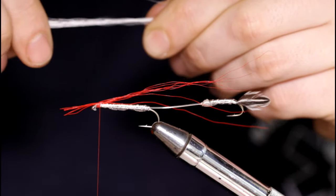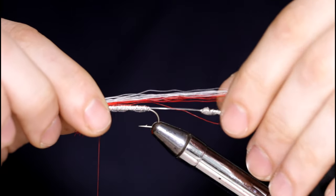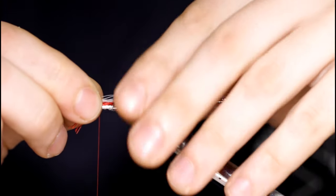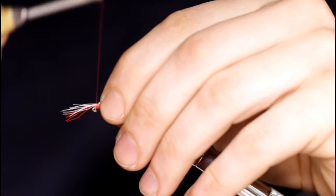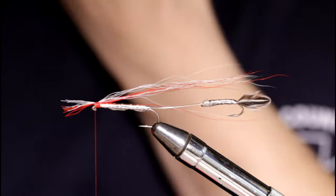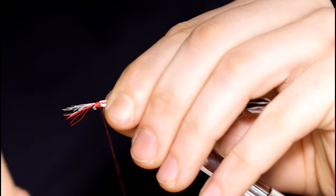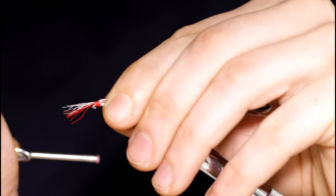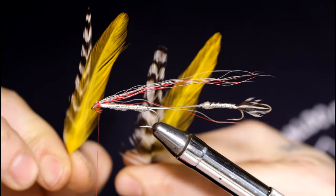Same thing with the white. Grab a pinch, pull out the short and fuzzies, set it on top. A few turns in front, make sure the material looks good. Then I'll take some stronger wraps to really bind down the material. Come in and snip this off. I got the thread a little bit. I'll clean that up in a second.